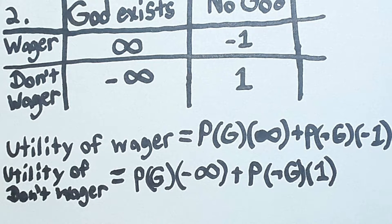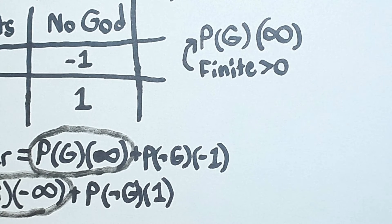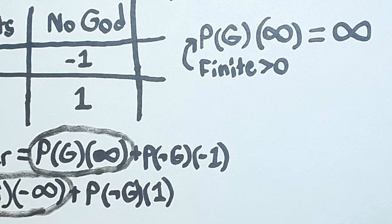Now, let's look at the terms where infinities appear in our equations. As long as the probability that God exists is some positive non-infinitesimal value, then when we multiply it by infinity, we're still going to get infinity.